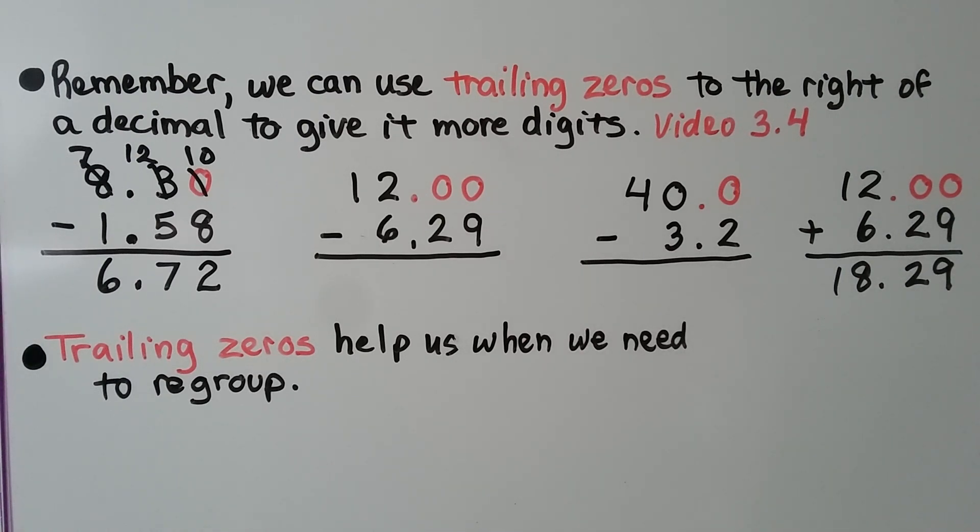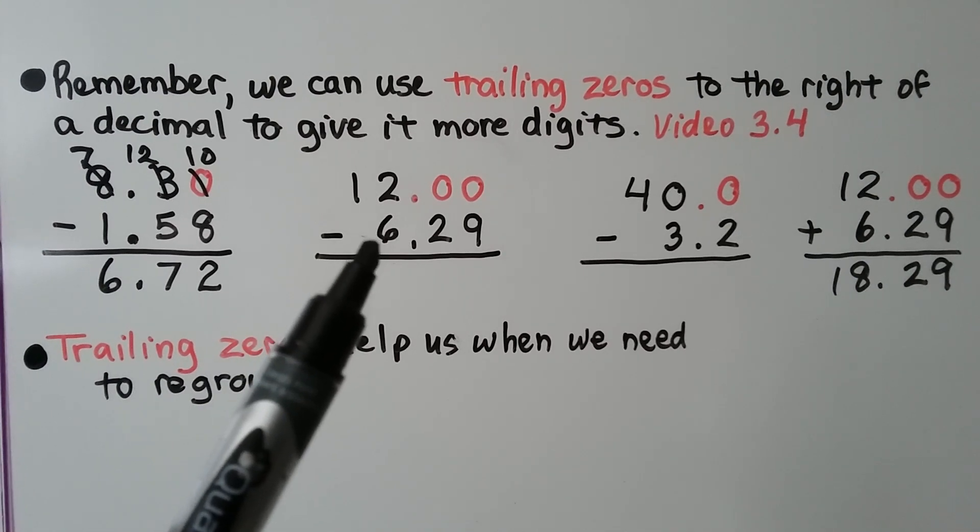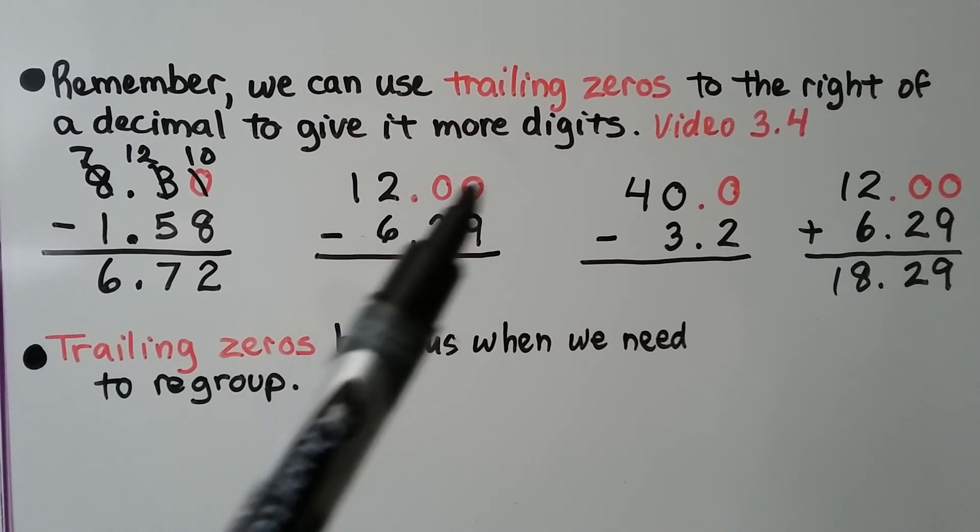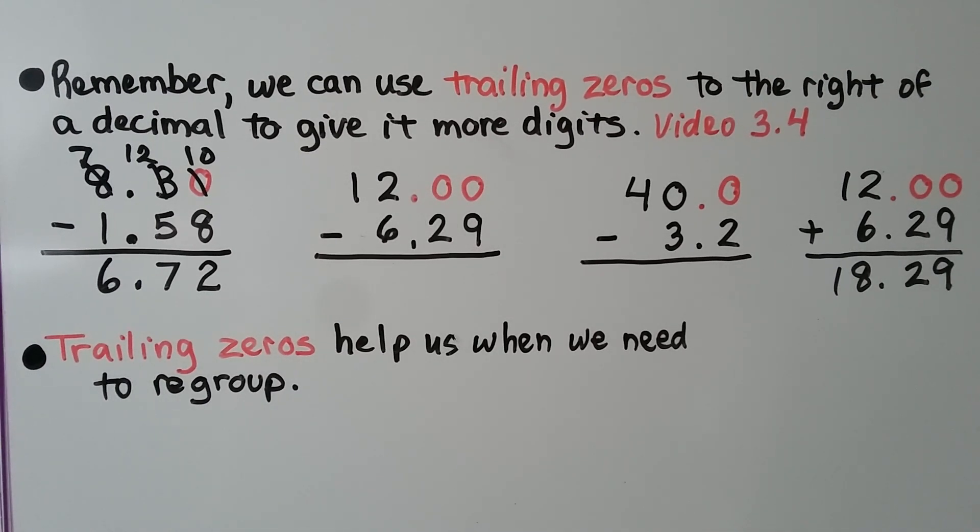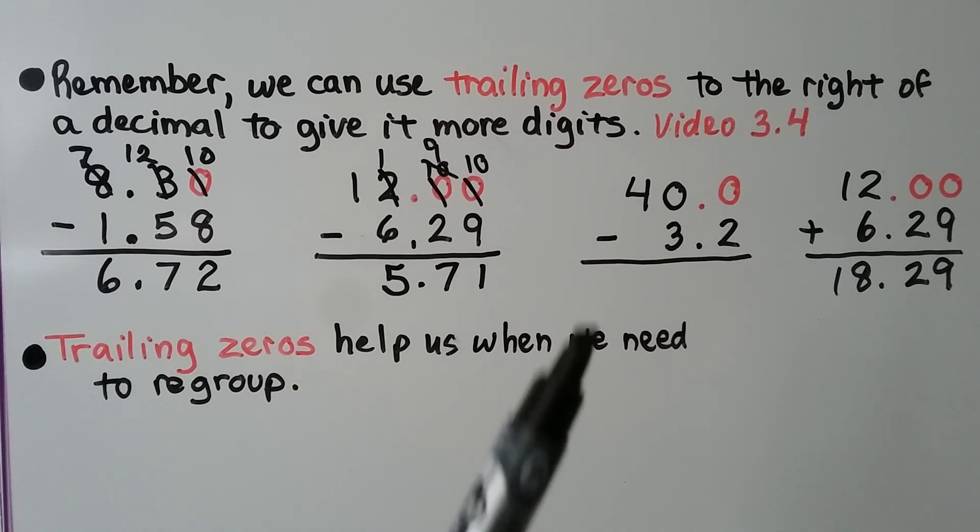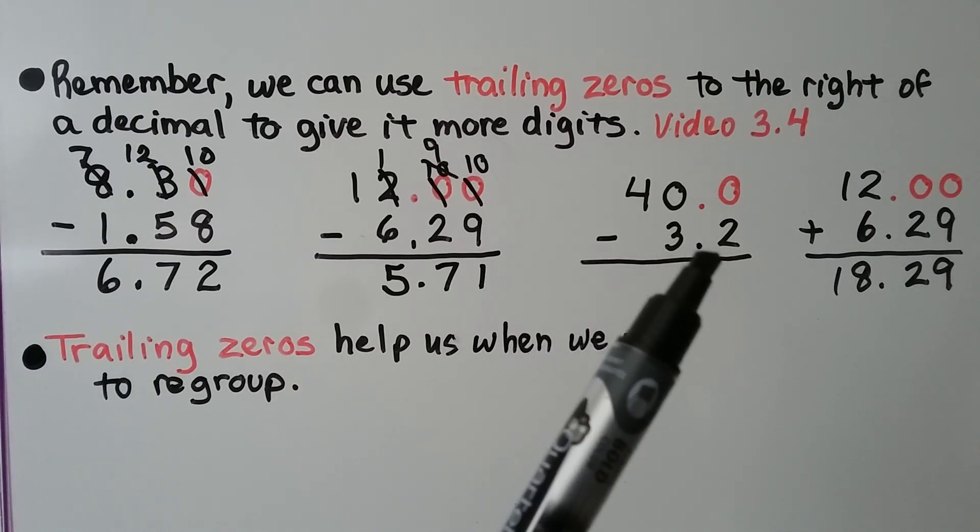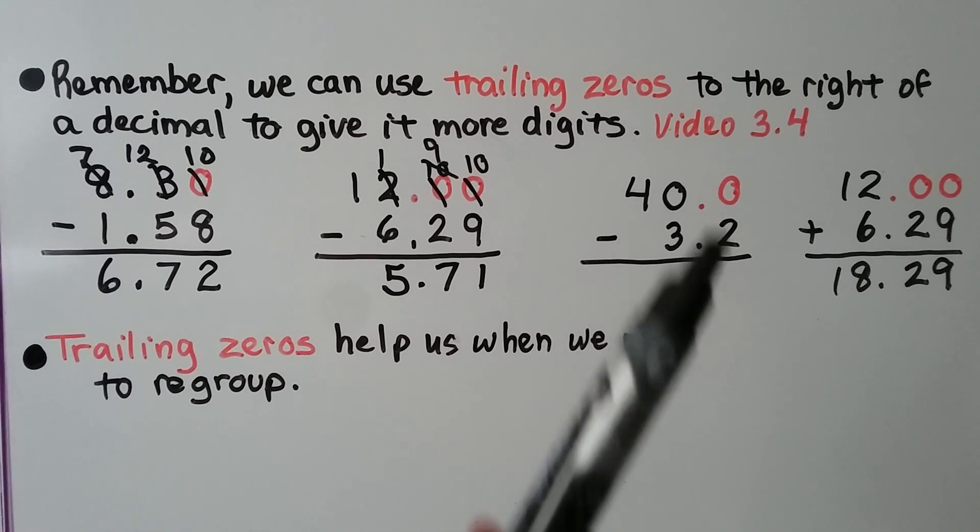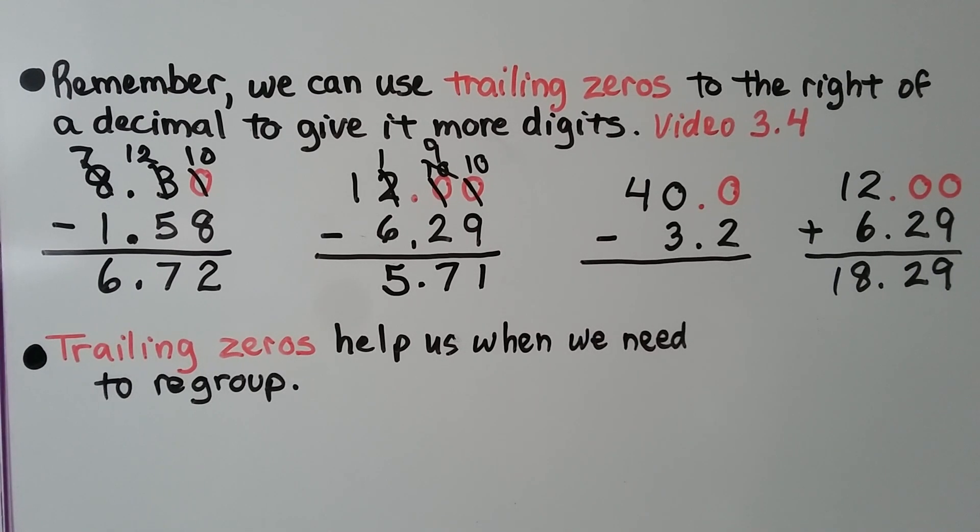If we have 12 minus 6.29, we can put a decimal point and 2 trailing zeros here so that we can subtract. We can regroup and we get 5.71. If we have 40 minus 3.2, we can put a decimal point and a 0 next to the whole number 40. That way we can regroup. It's equal to 36.8.